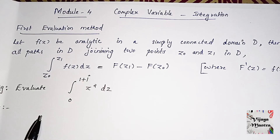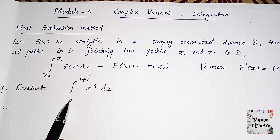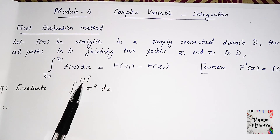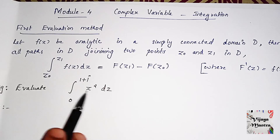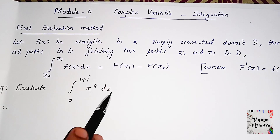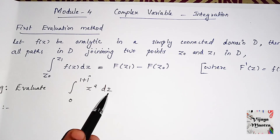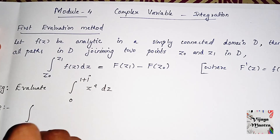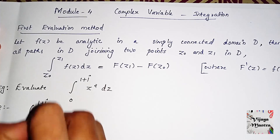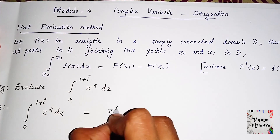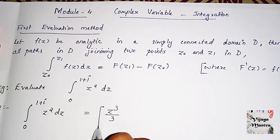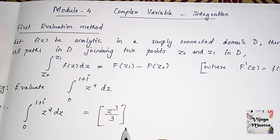We solve using the solution method with limits from Z0 to Z1 for complex numbers. For example, Z² dz is the integral. The integral of Z³ dz is Z³ by 3. The upper limit is 1 plus i and the lower limit is 0.